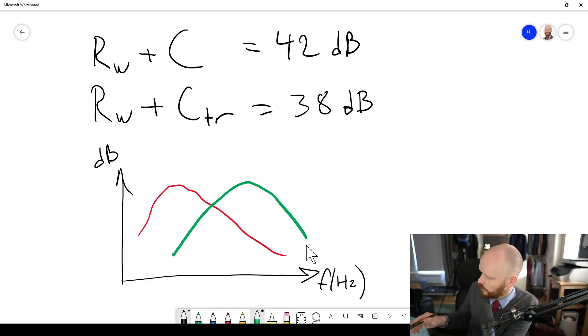And then if you take RW plus C, this rating, when you calculate the RW plus C, W is weighted. So you have a bunch of third octave bands here, and then you weigh them together into a single number quantity, a single number rating that represents the sound insulation. And if you put the emphasis on speech, you will have the mid to high frequency range, primarily.